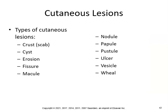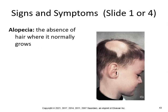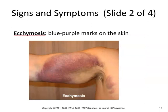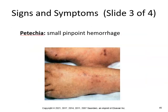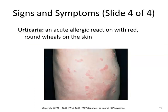Let's continue on to cutaneous lesions. Types of cutaneous lesions include: crust (scab), cyst, erosion, fissures, macules, nodules, papules, pustules, ulcers, vesicles, and wheals. Alopecia is the absence of hair where it normally grows. Ecchymosis is blue-purple marks on the skin. Petechiae are small pinpoint hemorrhages. Urticaria is an acute allergic reaction with red swollen wheals on the skin — make sure you know what urticaria is and what wheals are.